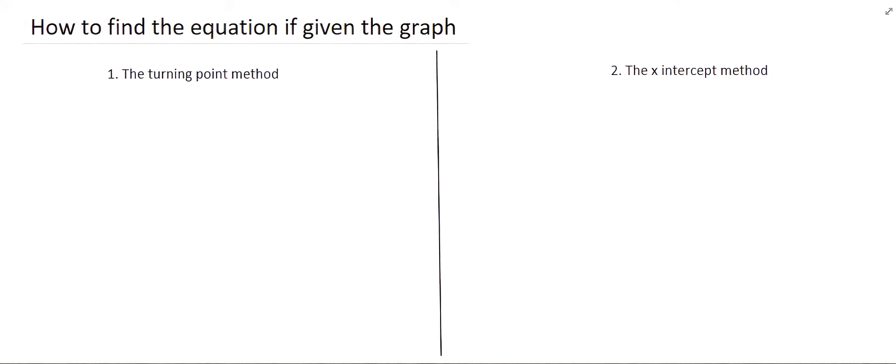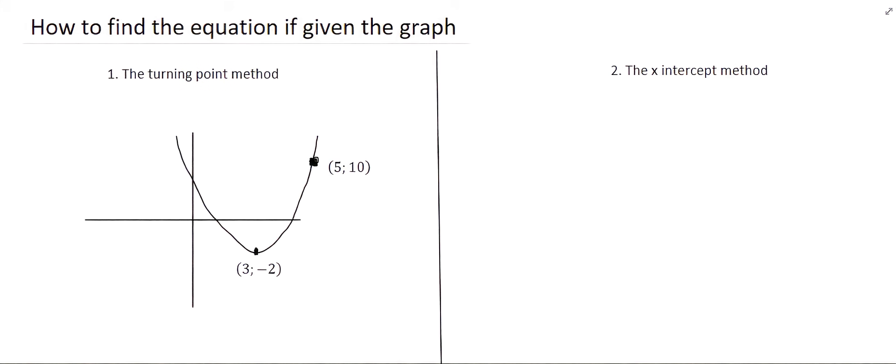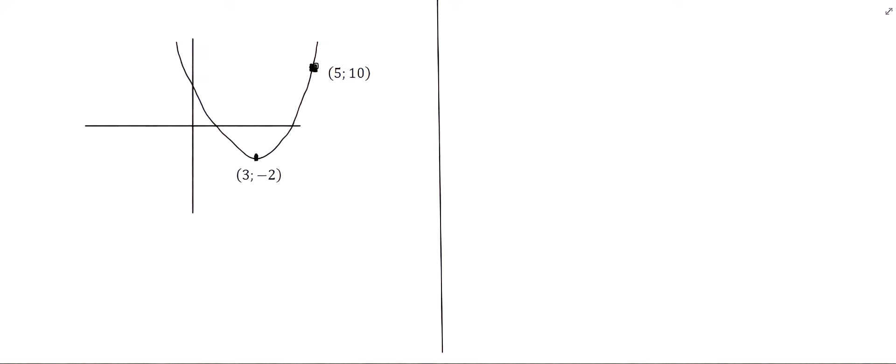The turning point method is when you have been given the turning point of the graph. This method also requires that any other point is given besides the turning point. Let's see how this technique works.